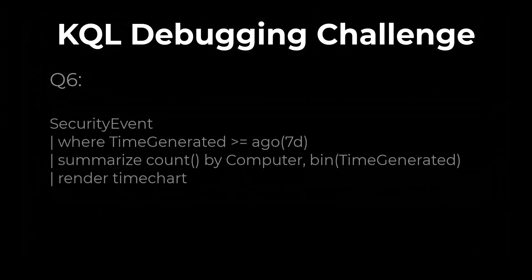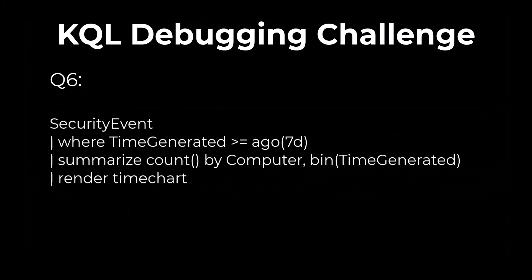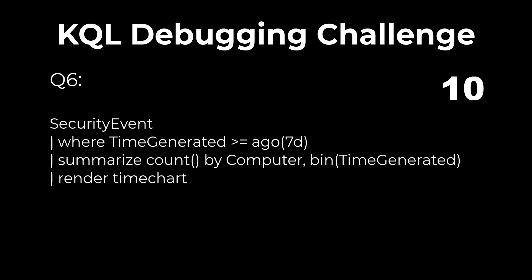Problem 6. Find the bug in this query. When we use bin to make buckets of time, it requires a second argument that defines the time span of each bucket after TimeGenerated.